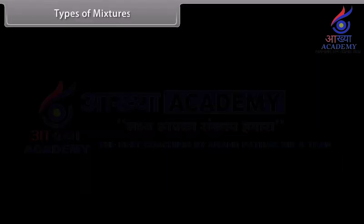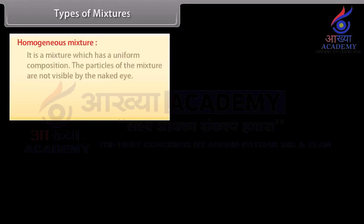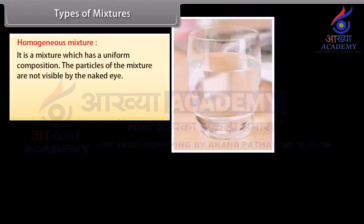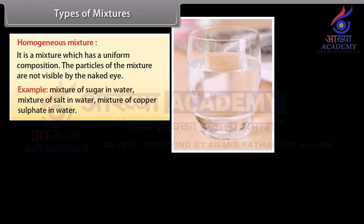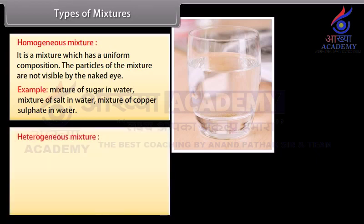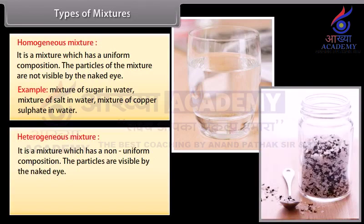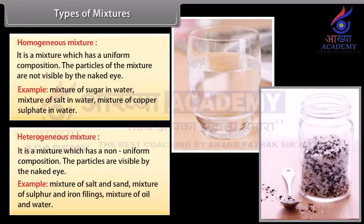Types of Mixtures. A homogeneous mixture has a uniform composition and the particles of the mixture are not visible by the naked eye. Examples include mixture of sugar in water, salt in water, and copper sulfate in water. A heterogeneous mixture has a non-uniform composition and the particles are visible by the naked eye. Examples include mixture of salt and sand, sulfur and iron filings, and oil and water.